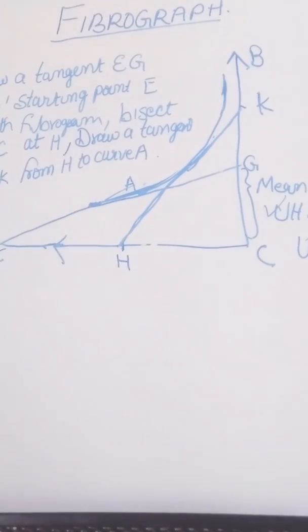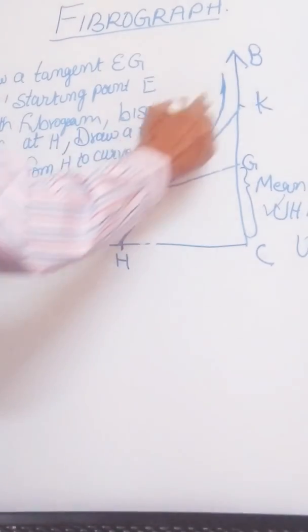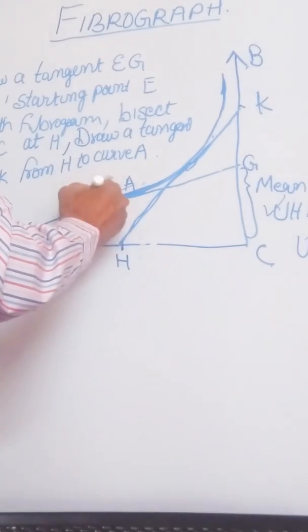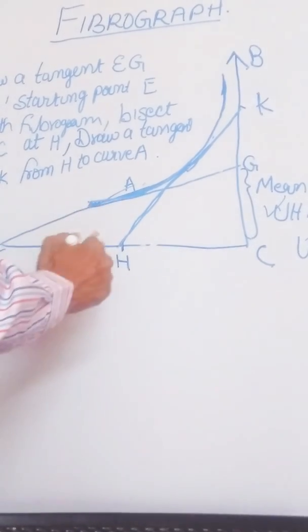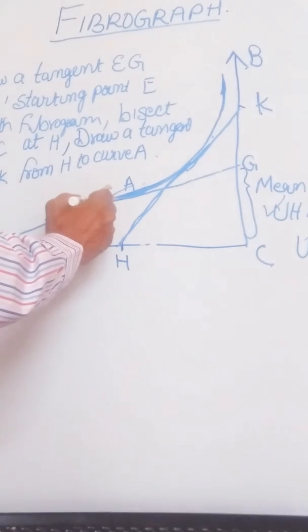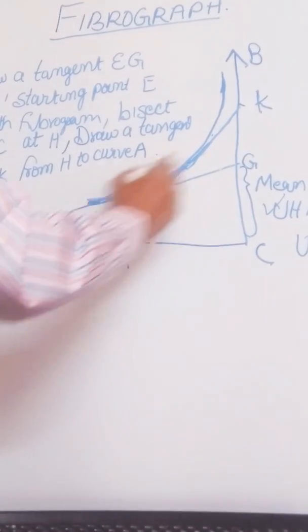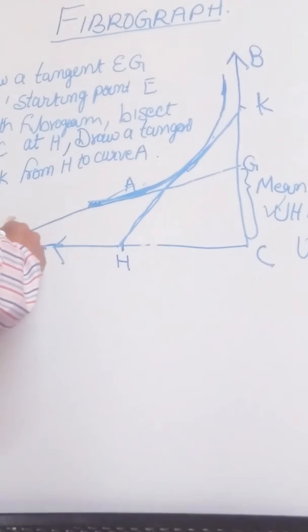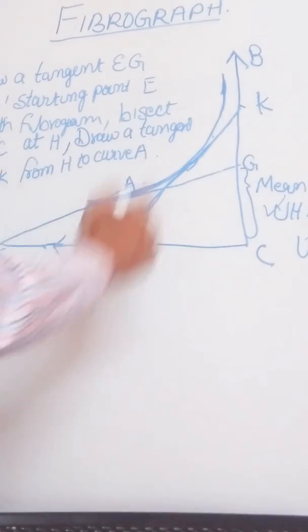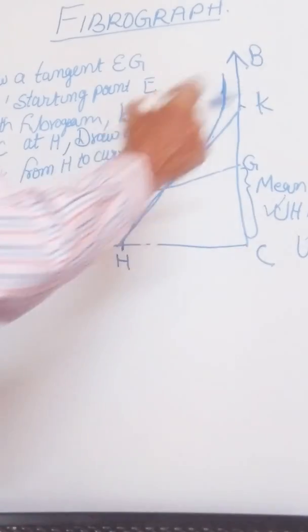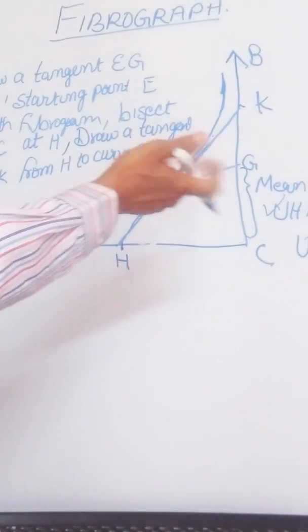So friends, I repeat again, we get the curve A. From the starting point of A we draw a tangent, that is the EG. So CG will be the mean length which can be calculated.